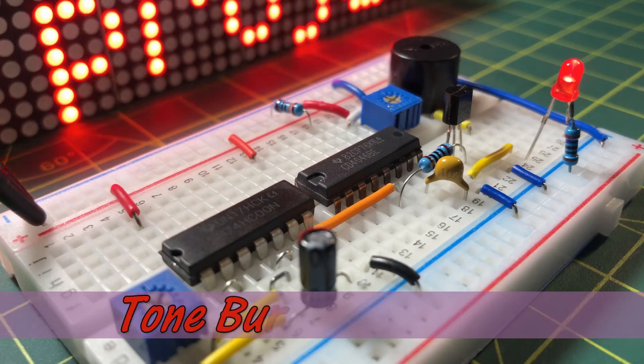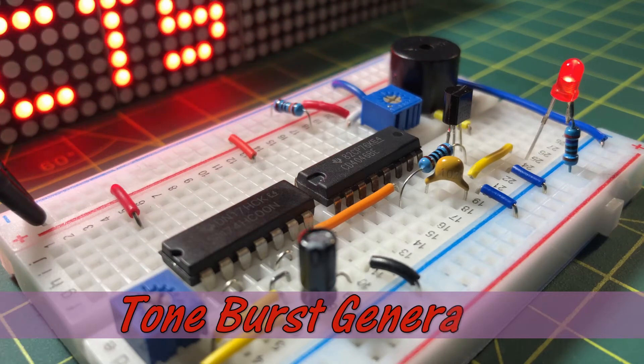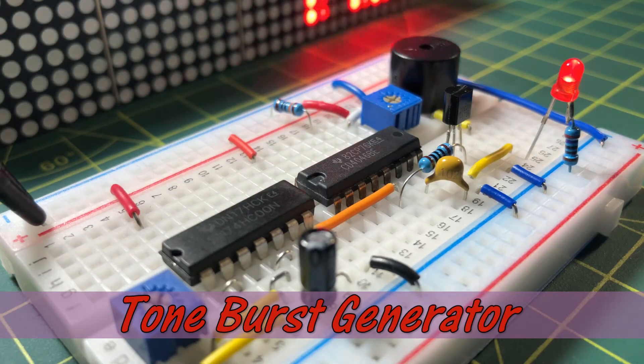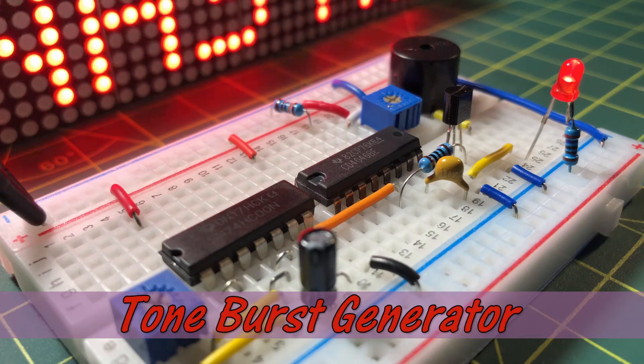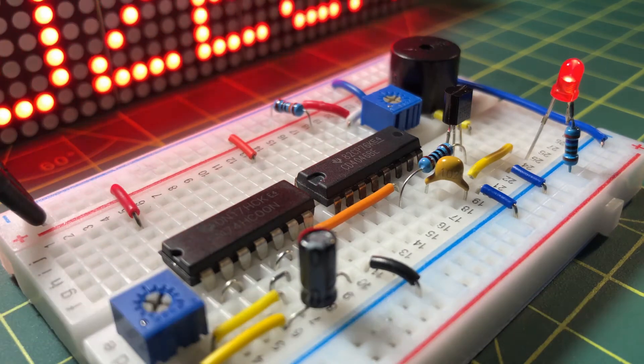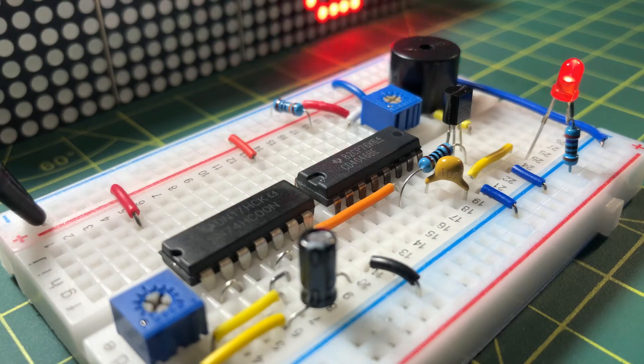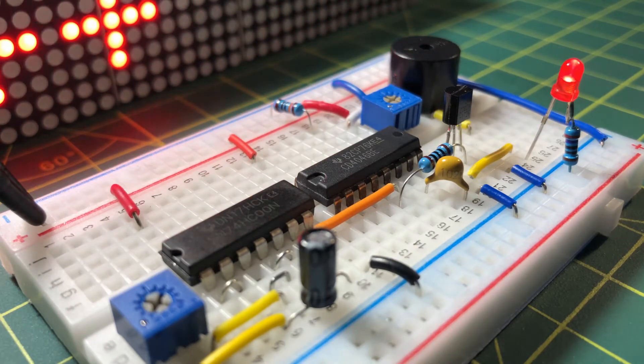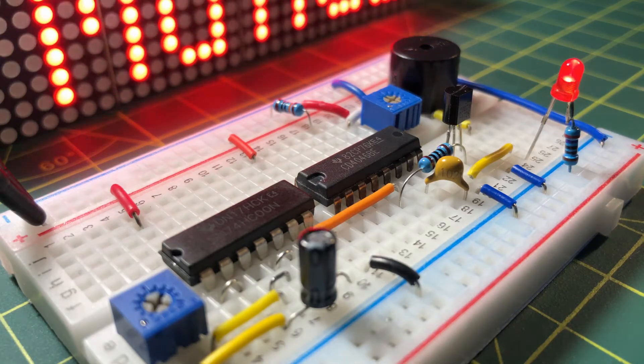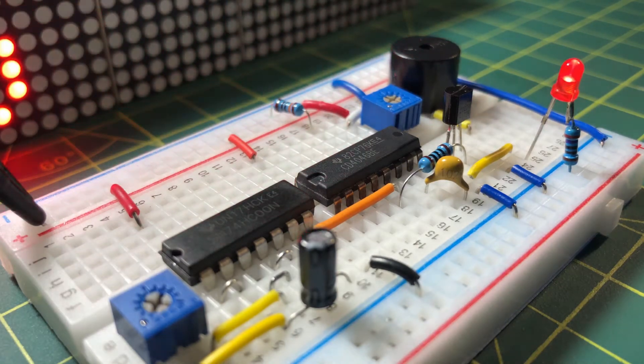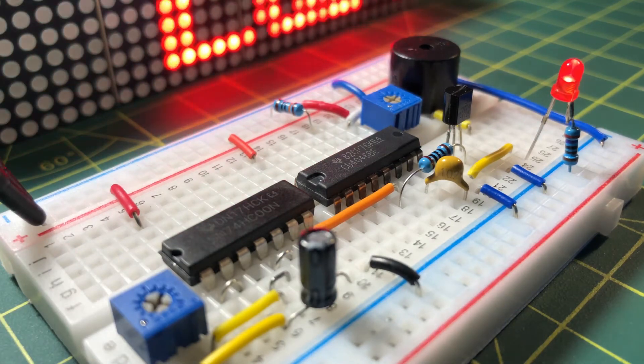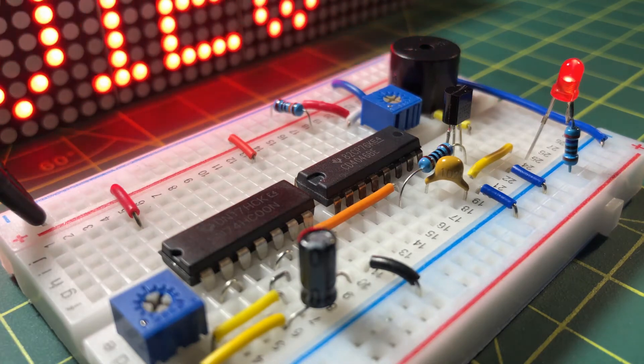This video demonstrates the tone burst generator circuit taken from the engineer's notebook manual by Forrest MIMS. The circuit is based on CMOS IC 4046 which is a phase locked loop circuit. The circuit uses the voltage controlled oscillator inside the 4046 to generate the tone burst at the output.